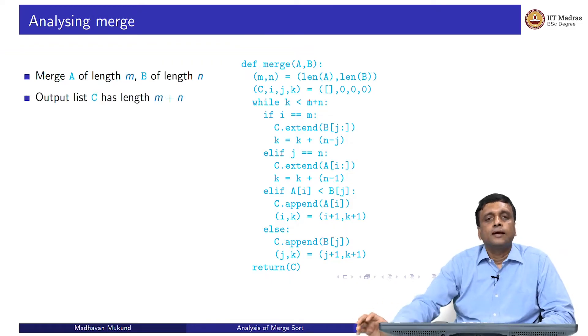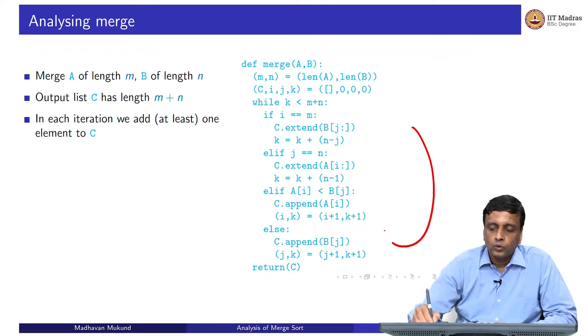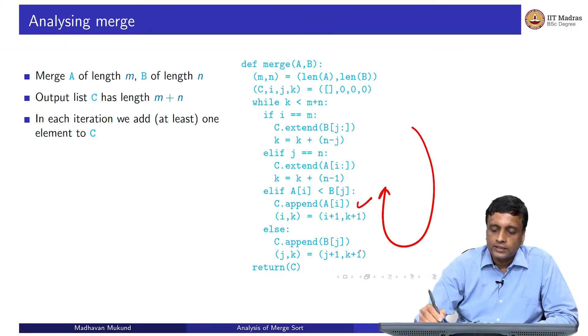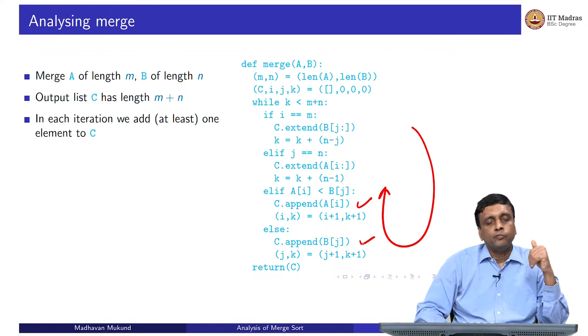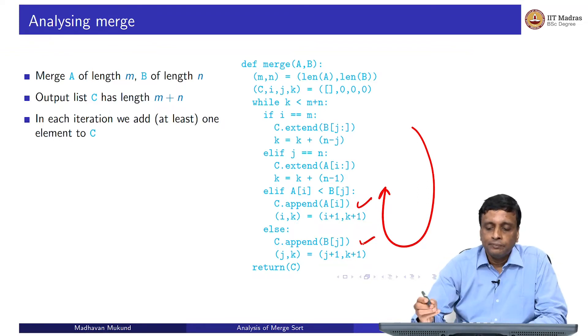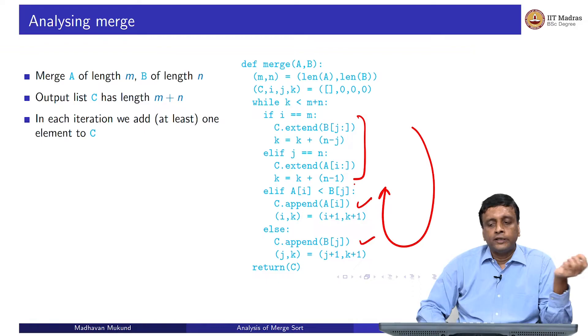Essentially, the output list has m plus n elements because all the elements of A and all the elements of B have to go into the list. The crucial thing is that when I go around this loop, then I make progress by moving at least one element. In these two cases, I move one element to C, either the first element of A or the first element of B moves to C. In some cases, I make a lot of progress - in these two cases, I actually move a whole chunk of elements. But in the worst case, it might happen only at the end.